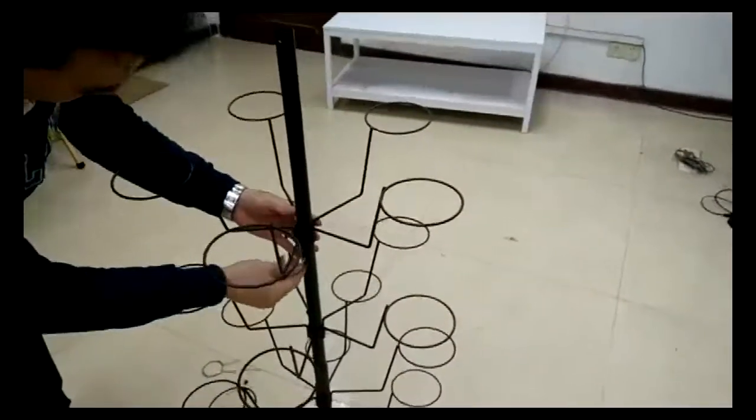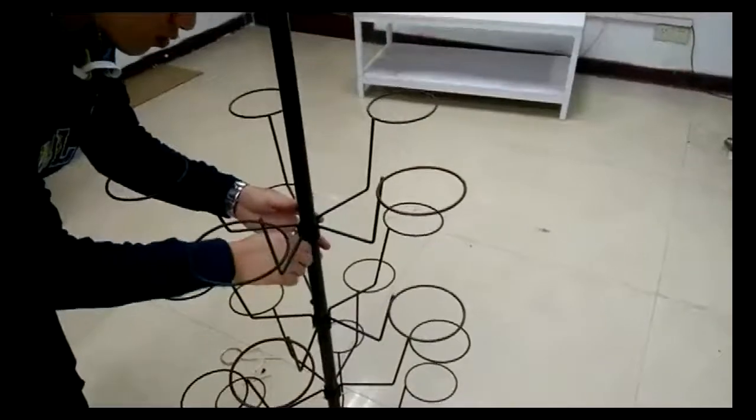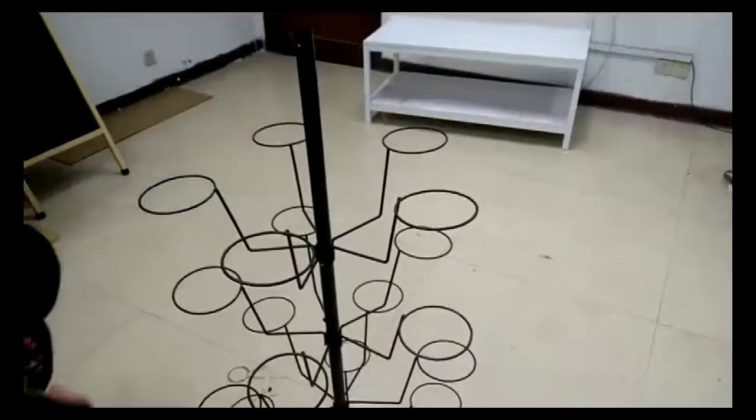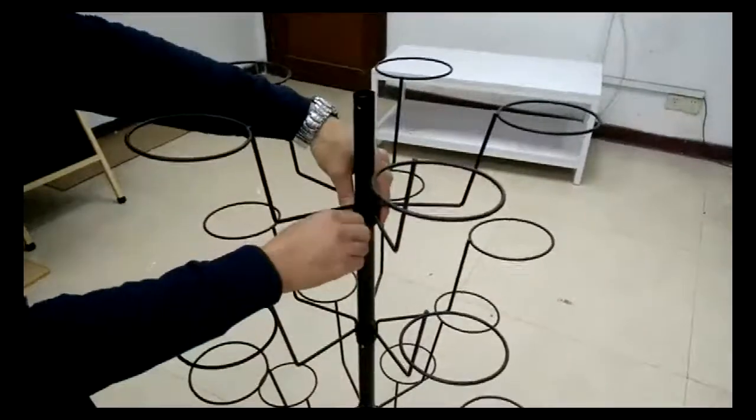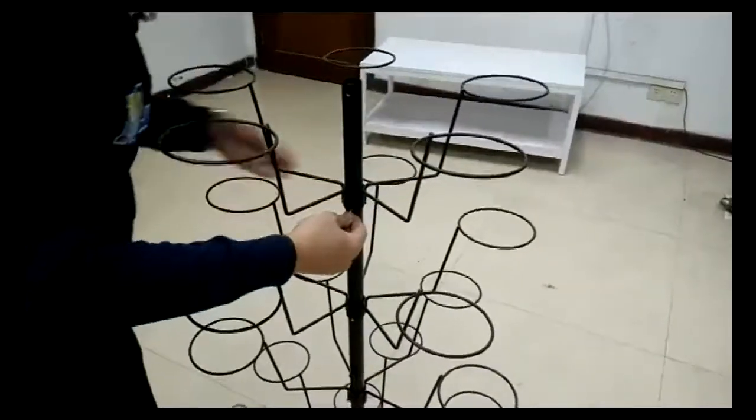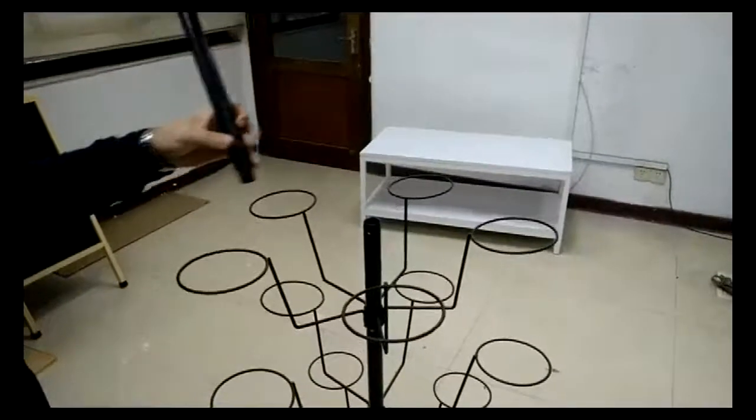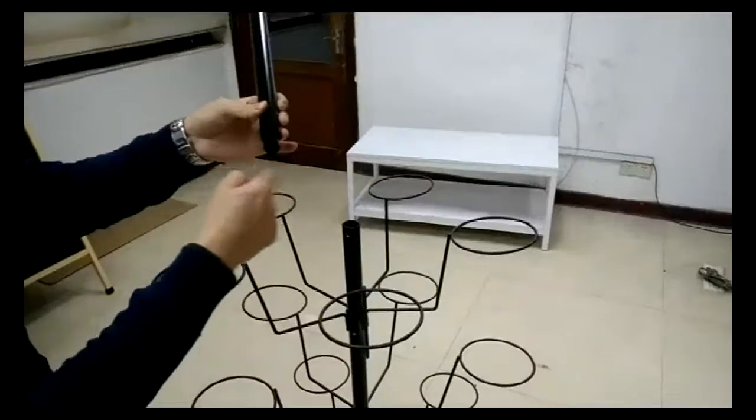Now, you can install the shelves on the second tier tubes. Once again, insert the cotter pins. If you have any questions, feel free to email us, cs at fixture displays dot com.